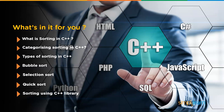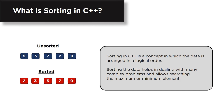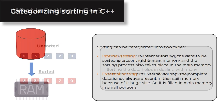First, what is sorting in C++? Sorting in C++ is a concept in which the elements of an array are rearranged in a logical order. This order can be from the lowest to the highest or highest to the lowest. Rearranging them in a sorted order helps in dealing with many problems like searching for the maximum or minimum element from an array.